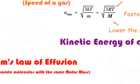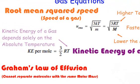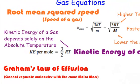Now the kinetic energy of a gas is equal to three halves R times temperature, which means the kinetic energy of a gas only depends upon the absolute temperature. The speed of a gas depends upon the temperature and the molar mass. The kinetic energy of a gas only depends upon the absolute temperature.